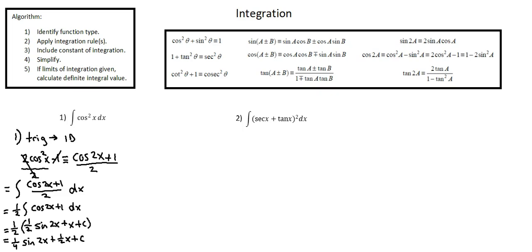So the integral of cos²x with respect to x is (1/4)sin 2x + (1/2)x + c.